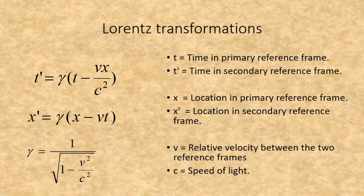In these formulas, t equals time in the primary reference frame, t prime equals time in the secondary reference frame, x is the location in the primary reference frame, x prime is the location in the secondary reference frame, v is the relative velocity between the two reference frames, and c is the speed of light.